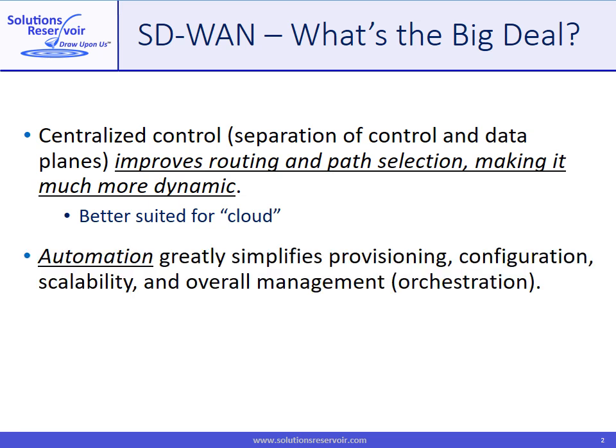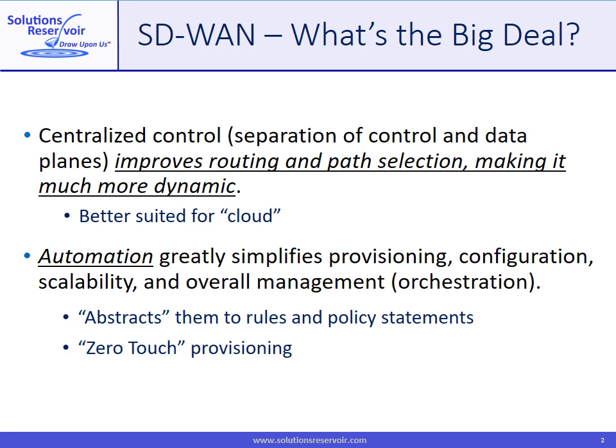SDN's automation simplifies many operational tasks, in some cases enabling things to be implemented that otherwise couldn't have been. You'll hear about abstraction, as in the controller abstracting the complex network execution to simple rules or statements of policy, and such simplicity also improves scalability. In some cases, bringing up a new site can occur with little or no touch, especially if that site aligns with an existing policy template.